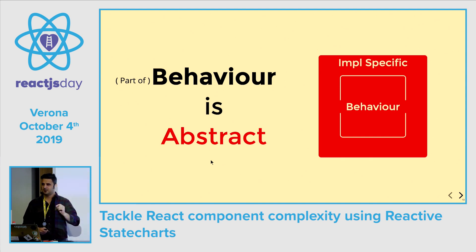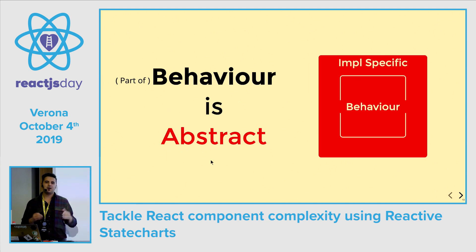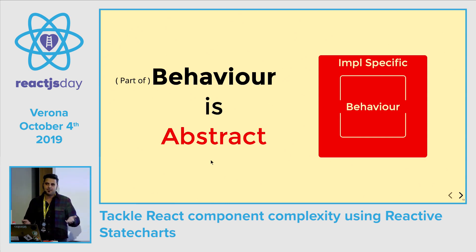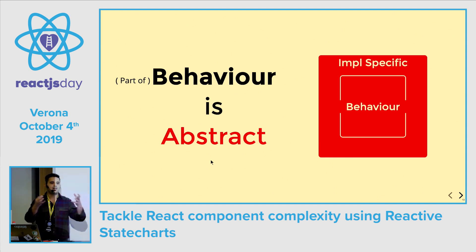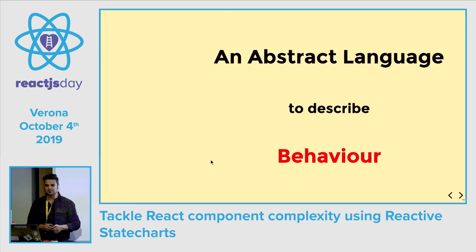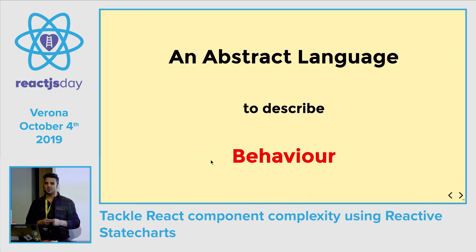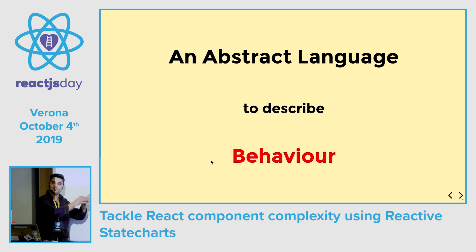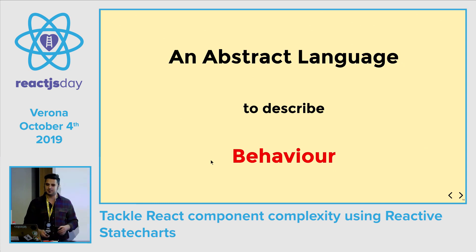Part of behavior is abstract — not everything can be abstracted as core behavior. Some things live in the implementation layer, like browser quirks or platform limitations. But the core behavior can be abstracted and communicated, letting the component work based on that without getting into how we implement it.